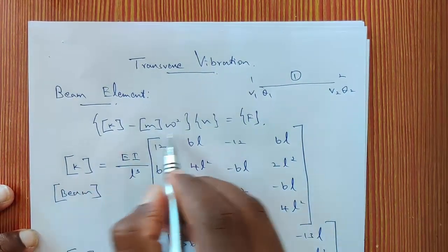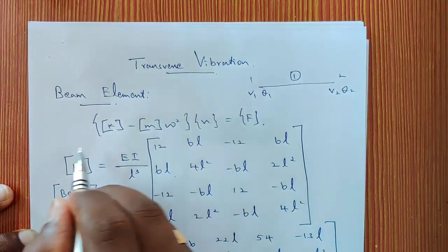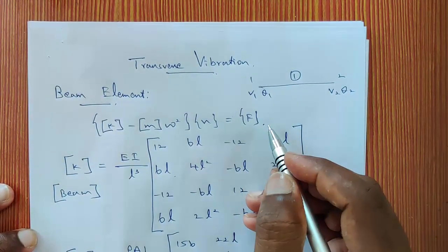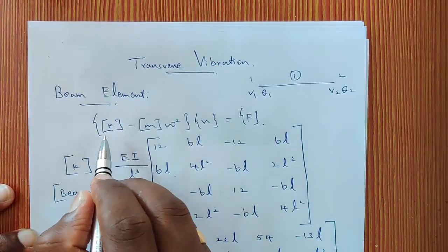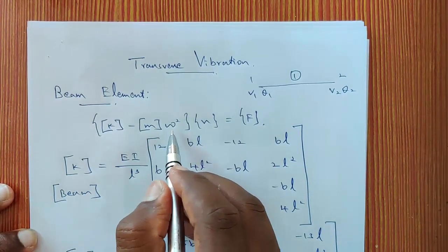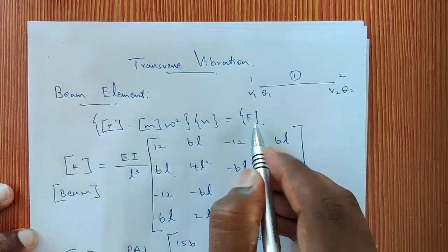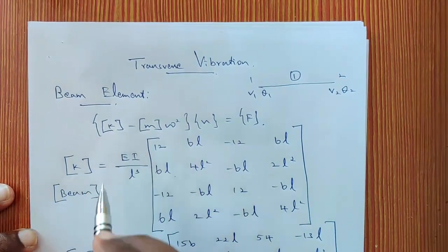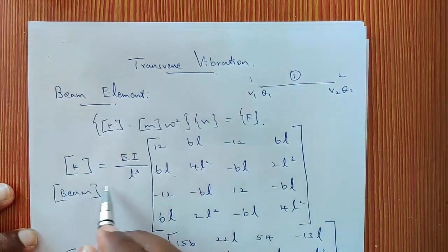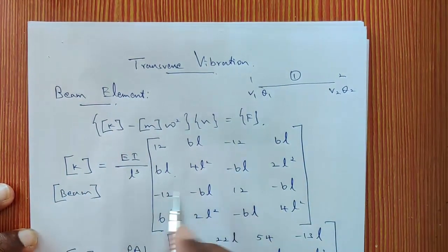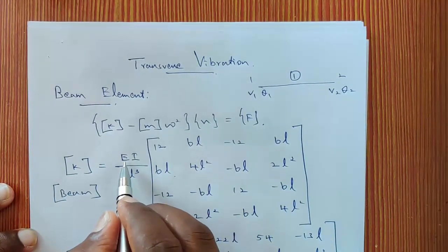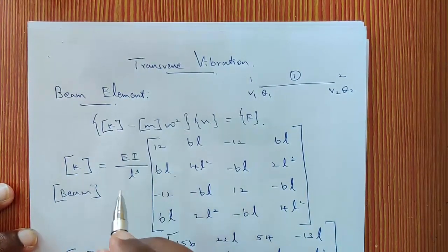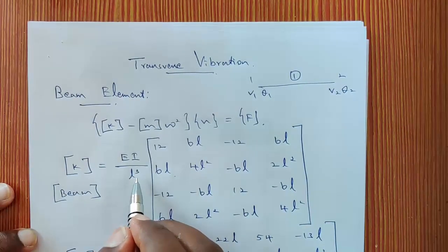This is the general equation to calculate the natural frequency of any beam or bar element. The equation is K minus M·ω² times u equals f. Here K is the stiffness matrix for the beam element. The stiffness matrix equation for the beam element uses E (Young's modulus), I (moment of inertia), and L (length of each element).